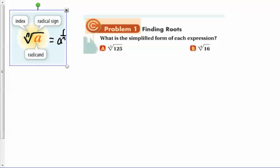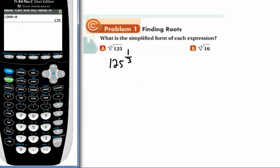So it says, what's the simplified form of each expression? Well, this is 125 to the 1/3 power. Now if I wanted to do this with my calculator, I could literally just grab my calculator, and I could go 125 to the 1 divided by 3 power. And if I do that, I get 5.